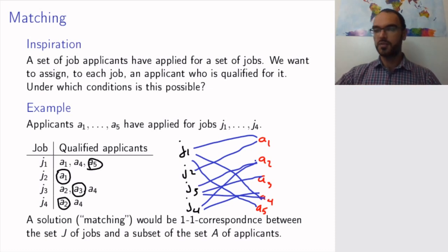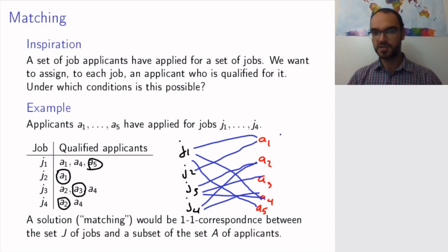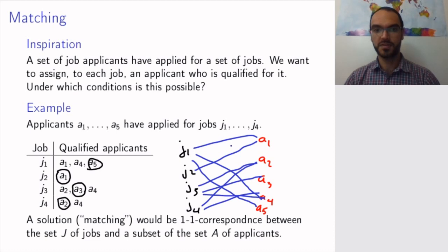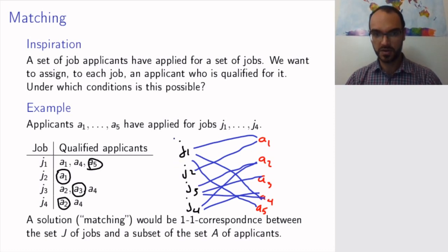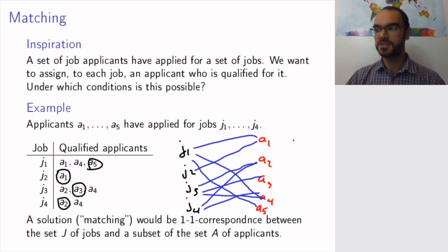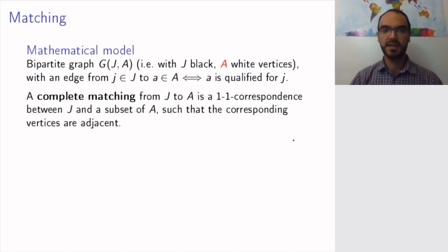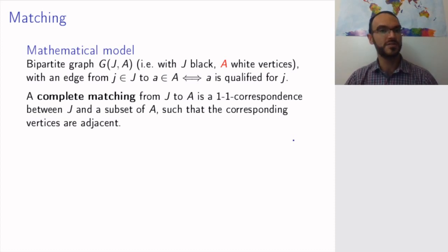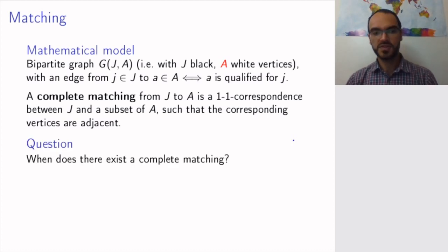A solution — a matching — would then be a one-to-one correspondence between the set of jobs and some subset of applicants, such that the applicant corresponding to the job is actually qualified for it. In other words, we want a one-to-one correspondence between all the black vertices and some white vertices so that the corresponding vertices are adjacent. And this is what we will call a complete matching: a one-to-one correspondence between J and a subset of A so that the corresponding vertices are adjacent.